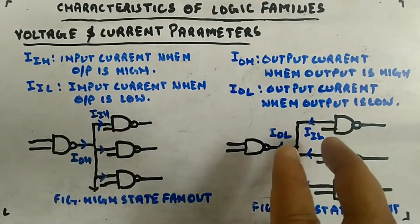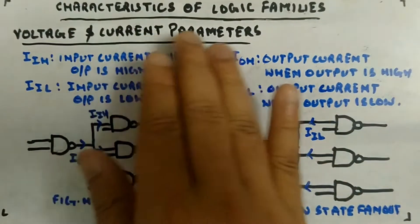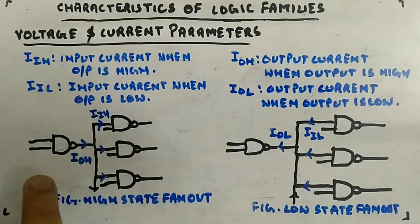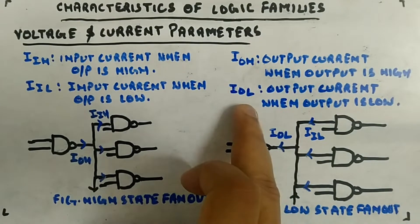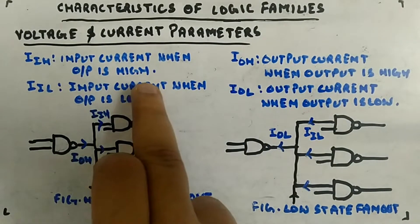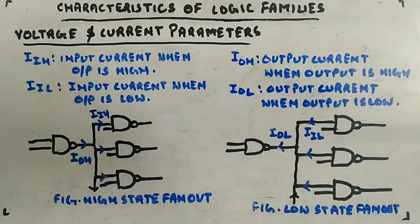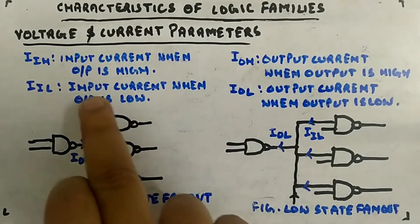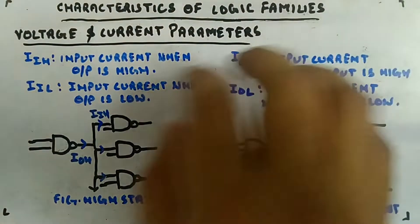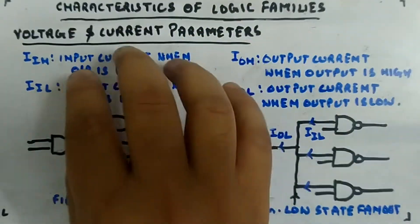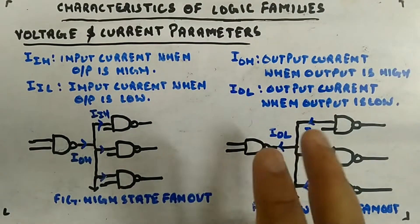For example, in fan-out we use four currents: IIH, IIL, IOH, and IOL. These are your current parameters. IIH is input current when output is high, IOH is output current when output is high, IIL is input current when output is low, and IOL is output current when output is low. These are used in fan-out — the high-state fan-out and the low-state fan-out — and the overall fan-out is the minimum of the two.